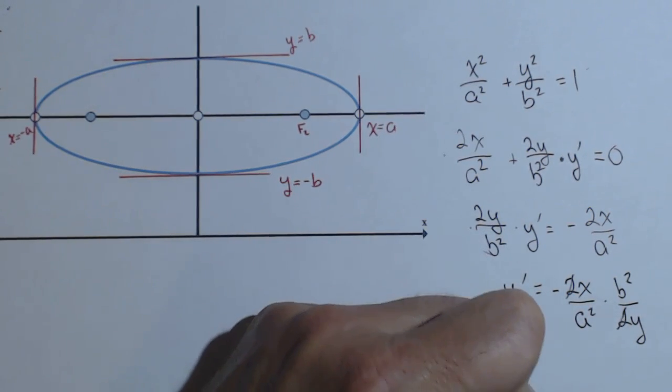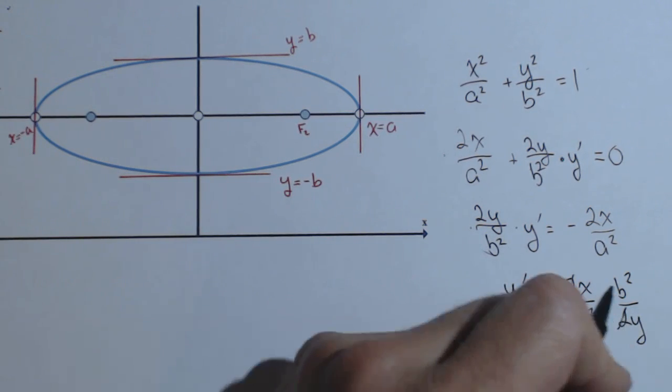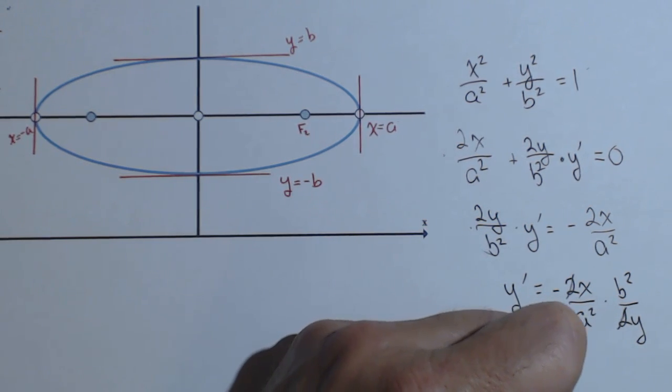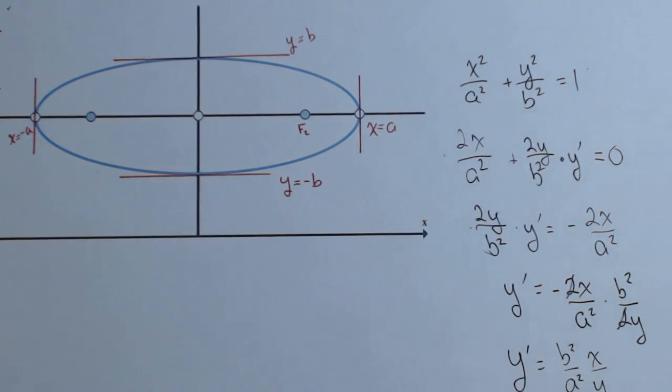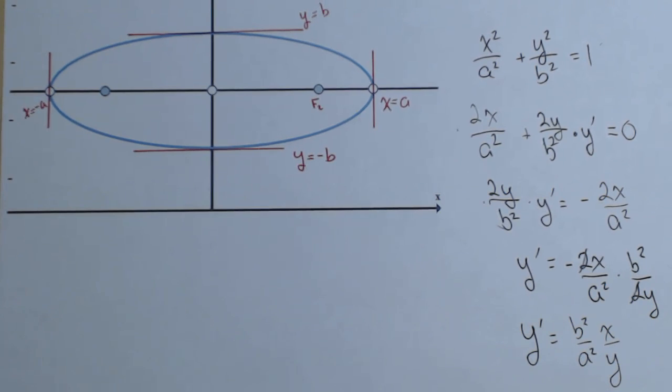So our derivative is y prime equals b squared over a squared times negative x over y. What that'll do is that'll give us, for any ellipse, the derivative at any given point.